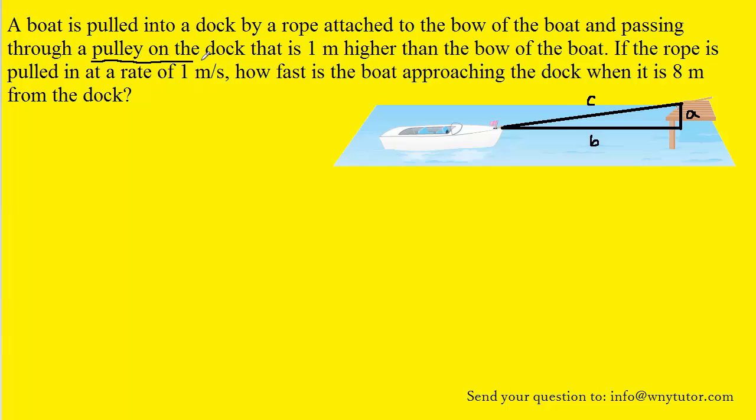The question states that the pulley on the dock is one meter higher than the bow of the boat, so in essence they're saying that this distance right here that we have marked as A is equal to one meter. And then the question asks how fast is the boat approaching the dock when it is eight meters from the dock, so the distance from the boat to the dock would be represented as B, and so we know that B is equal to eight.